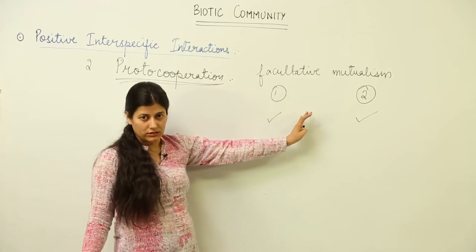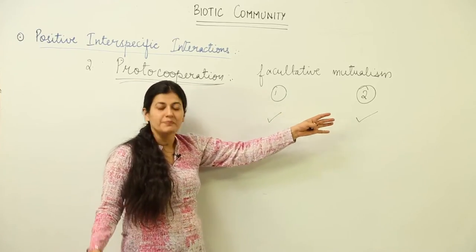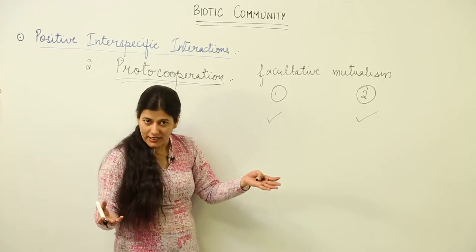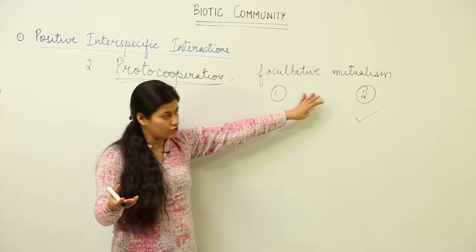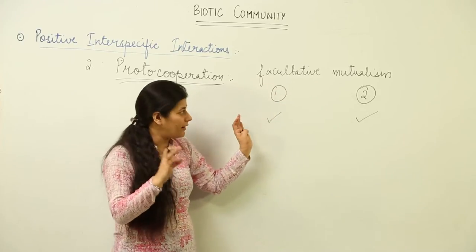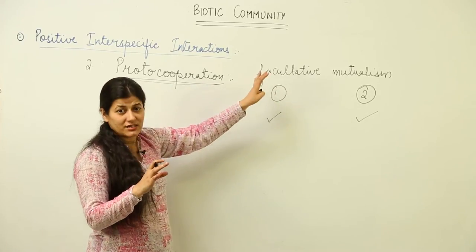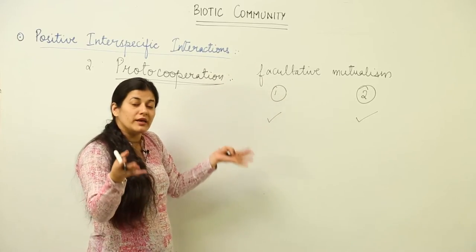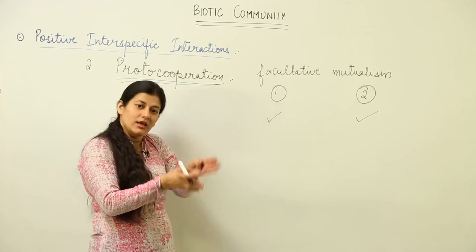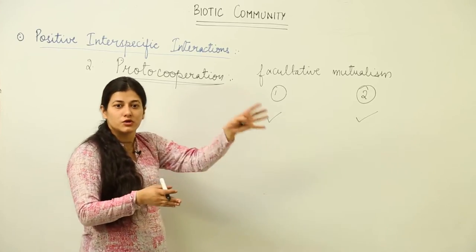They can survive without each other as well. Proto-cooperation is otherwise termed as facultative mutualism. It is very aptly stated that it is facultative - both organisms can survive without each other, but whenever they interact, they benefit each other. This is what proto-cooperation is all about.